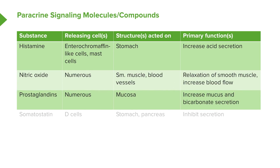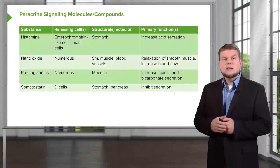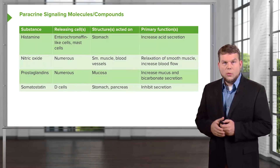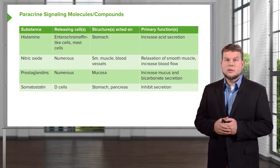Prostaglandins are also released by many different cell types and these increase both mucus and bicarbonate secretion, as well as decreasing the secretion of hydrogen ions. Our final signaling molecule is somatostatin, released by D cells, and this inhibits most secretions. These are our four paracrine signaling molecules.